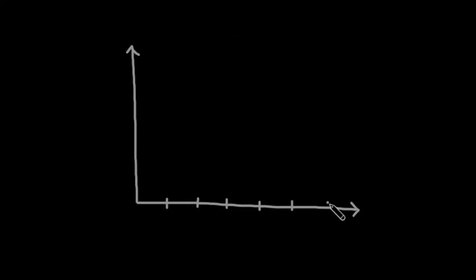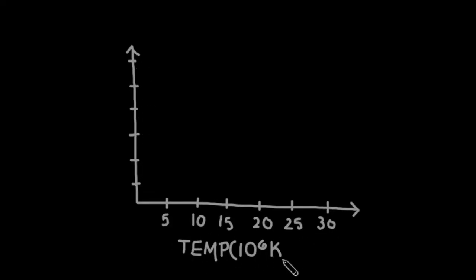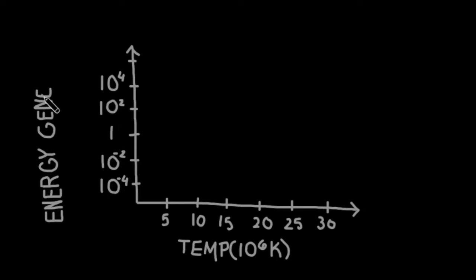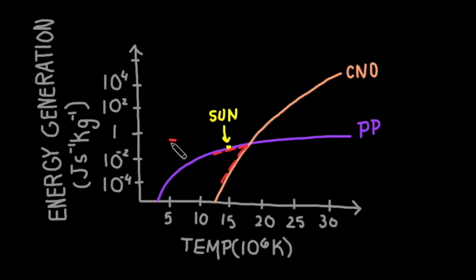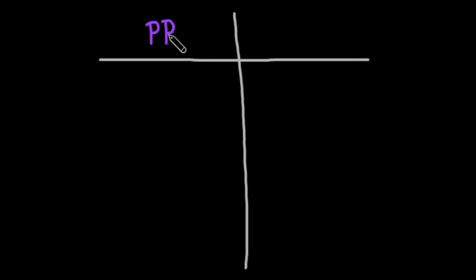Now let's take a look at how these two cycles compare. The energy generation curve for the CNO cycle is much steeper than the PP cycle. From this, we can see that the CNO cycle is more energy efficient at higher temperatures, while the sun, with a core temperature of around 15 million Kelvin, depends on the PP chain. At the sun's temperature, the energy generation of the PP chain scales with temperature to the fourth power, while the CNO cycle scales with temperature to the twentieth power.